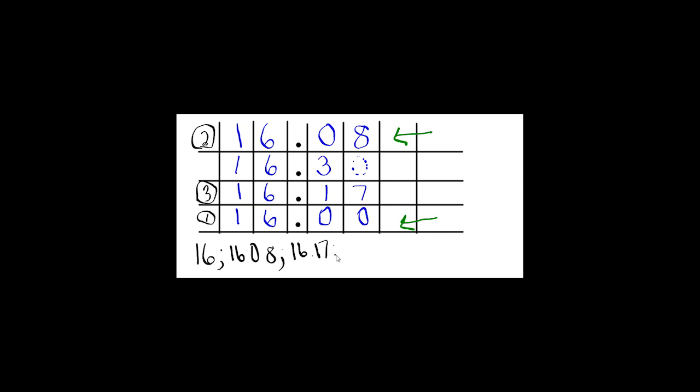And by default, we know that the greatest or the slowest time was the 16 and 3 tenths, or 16 and 30 hundredths, because the three in the tenths place is the greatest value of all of the tenths place. So that would be my, unfortunately, last place of that race.